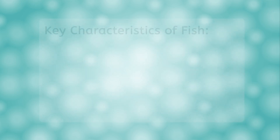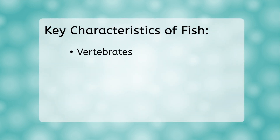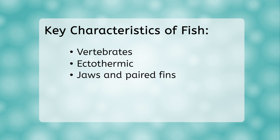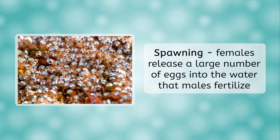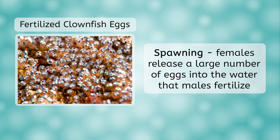I think it's time we start defining the key anatomical characteristics of fish. First and most importantly, they are vertebrates. Second, they are ectothermic — sometimes you may hear it referred to as warm-blooded. Another key characteristic is the evolution of jaws and paired fins. Third in our list of anatomical features are the gills; fish use gills to breathe via a closed circulatory system. Finally, fish reproduce via sexual reproduction. Most species use a technique called spawning, in which the female releases a lot of eggs into the water and males fertilize the eggs. Some species don't care for their eggs and young, while others do.